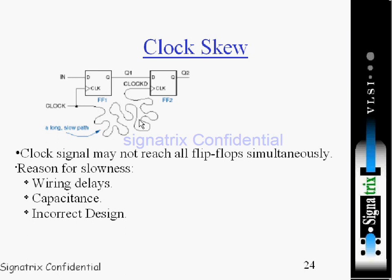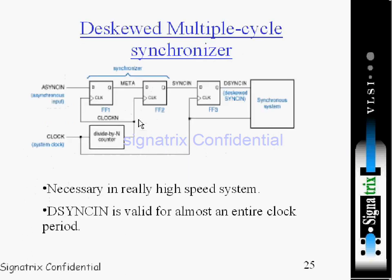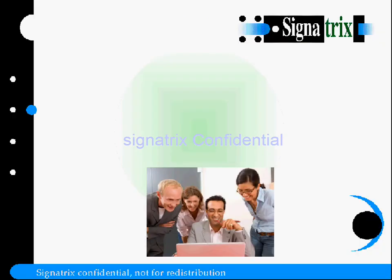We should consider all these things before designing. In an FPGA, we need to place blocks as close as possible, otherwise we will get clock skew — meaning a delay. Coming to the de-skewed multiple cycle synchronizer, the working is almost the same but with one key difference.